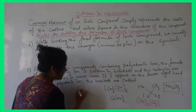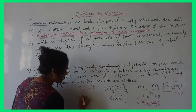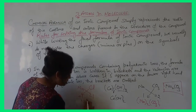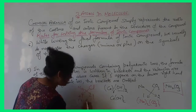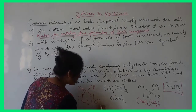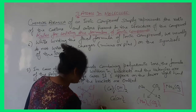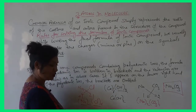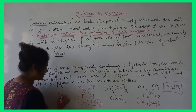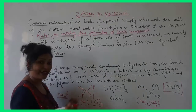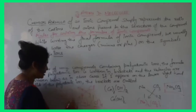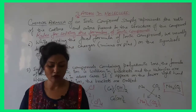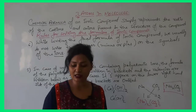For example, for NaCl: write charge +1 on Na and −1 on Cl, cross over the valency, put brackets. Since subscript is 1 on both sides, remove both brackets and the plus/minus charges. Final formula: NaCl. This is the final formula of sodium chloride.